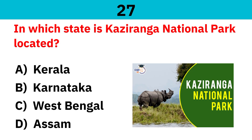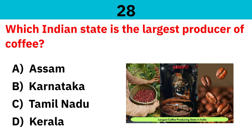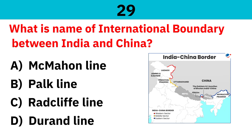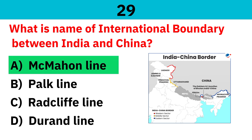In which state is Kaziranga National Park located? Correct answer is Assam. Which Indian state is the largest producer of coffee? Correct answer is Karnataka. What is the name of the international boundary between India and China? Correct answer is the McMahon Line.